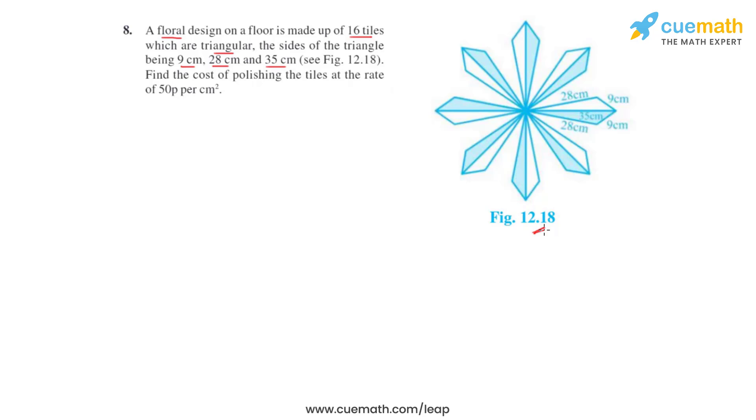12.18. So we can see that there are two triangle tiles in a single leaf of the floral design and there are eight such leaves, so there are a total of 16 tiles. The side lengths for these triangular tiles has been given. We have to find the cost of polishing the tiles at the rate of 50 paisa per centimeter square.